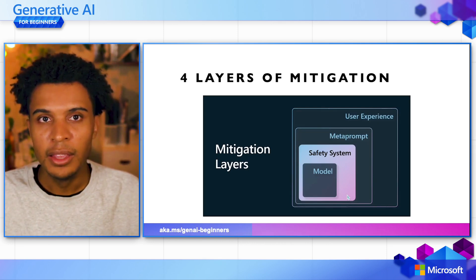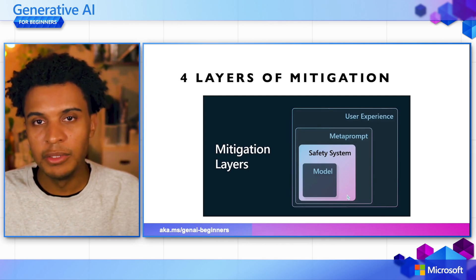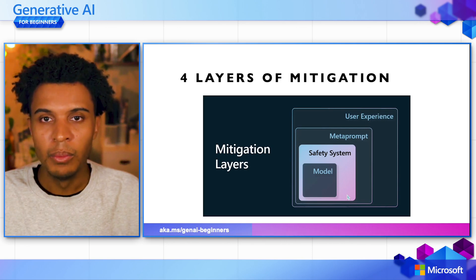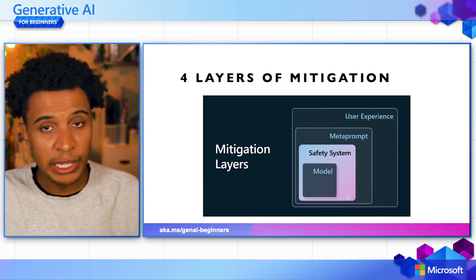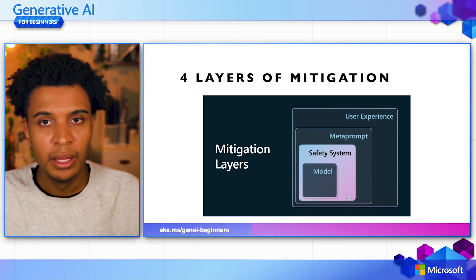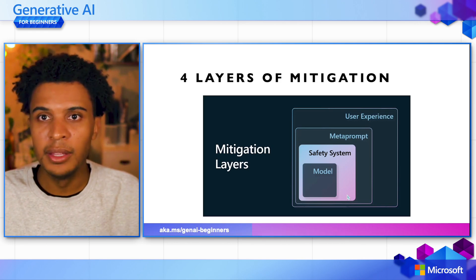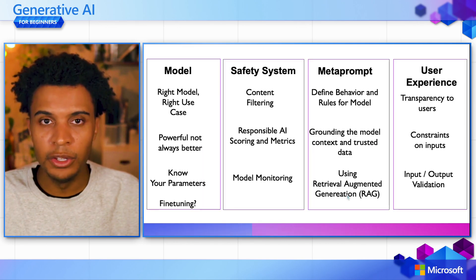There are four layers of mitigation we're going to discover today: one is on the model level, building a safety system, using correct meta prompts, and then lastly on the user experience side.